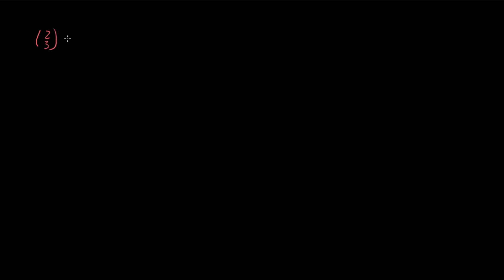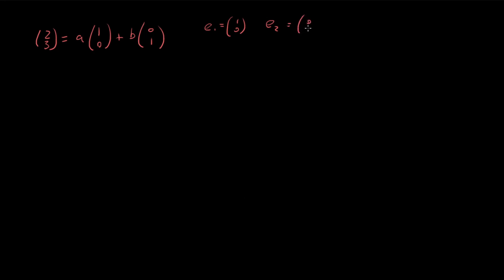We know in linear algebra that if we have some vector, say (2, 3), we can expand this vector in terms of some basis vectors. So we know that this vector (2, 3) can be expressed as some constant A times the vector (1, 0) plus some constant B times the vector (0, 1). These basis vectors are E1 = (1, 0) and E2 = (0, 1). To solve for A and B, we use the method of inspection, and we see that A is 2 and B is 3.